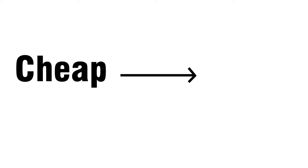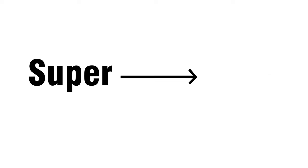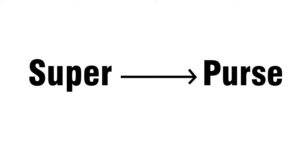Cheap. This is a fruit. Answer is peach. Super. This is something you keep money in. Answer is purse.